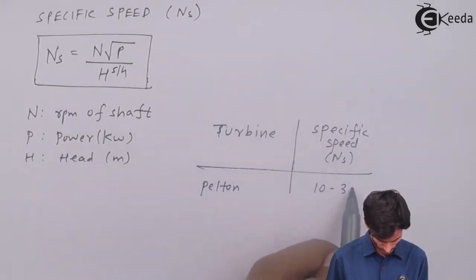Now that we have the power (6478.32 kW), the head (300 m), and speed (300 RPM), we substitute these into the specific speed formula N_s = N√P / H^(5/4). The result is a specific speed of 19.34, which falls within the expected Pelton turbine range of 10–35.